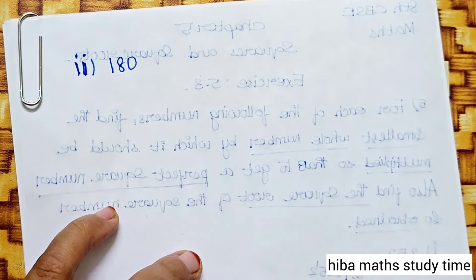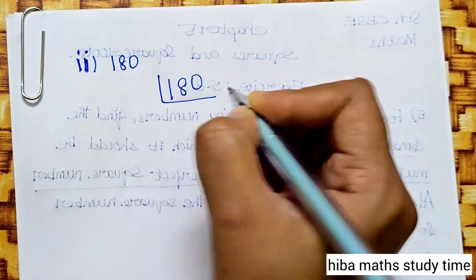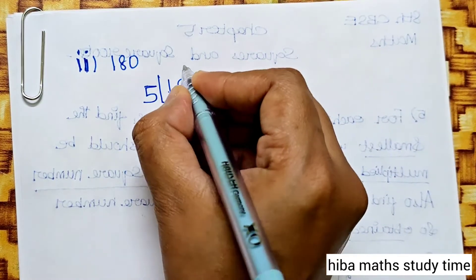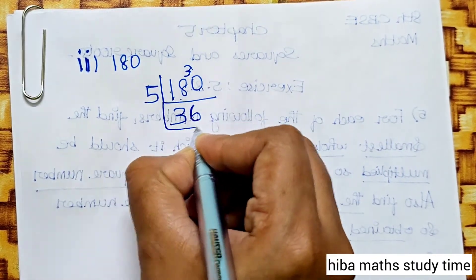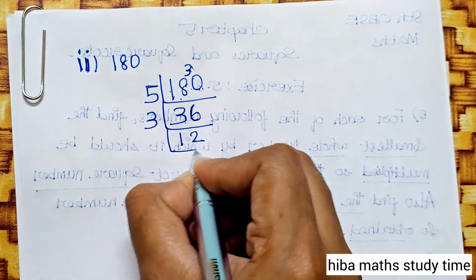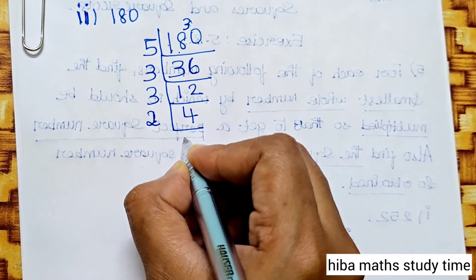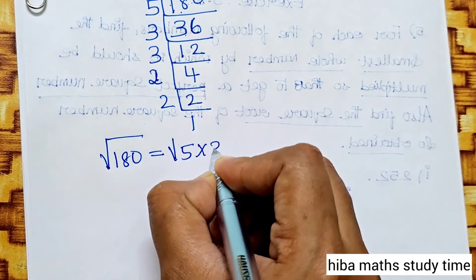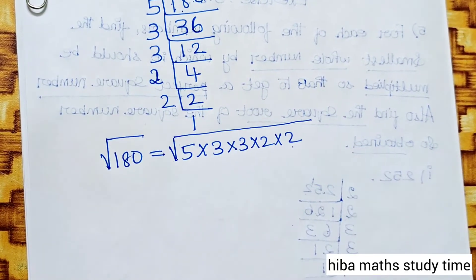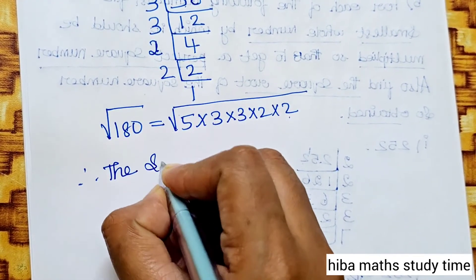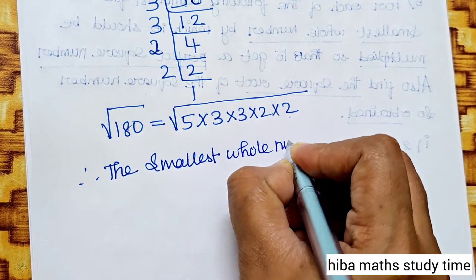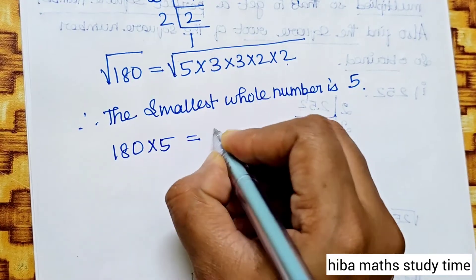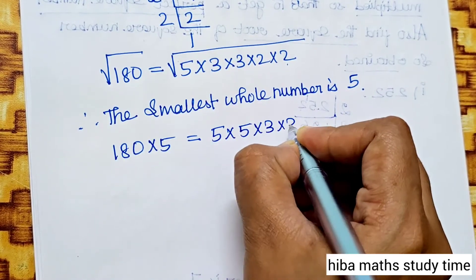Second subdivision: 180. We factorize 180. The prime factorization gives: 180 = 5 × 3 × 3 × 2 × 2. Here, 5 is not a pair. Therefore, the smallest whole number is 5.